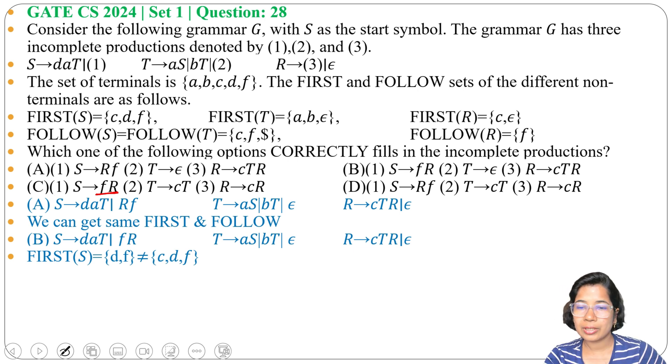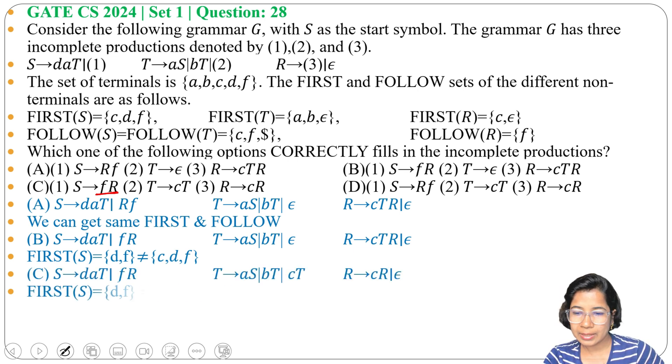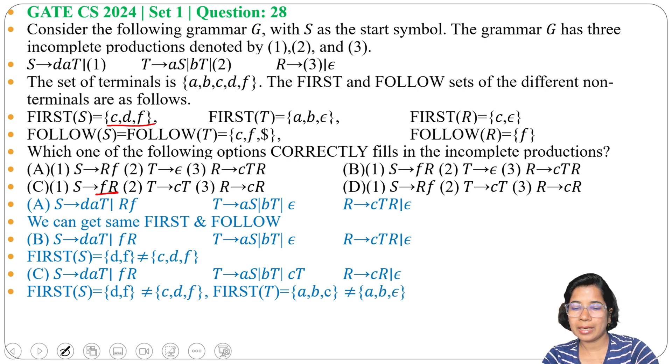Now write this production in place of 1, 2, and 3. Now first of S equals to DF. But here it's CDF. So first of S is not same. Then first of T, here we got A, B, C. But here it's A, B, and Epsilon. So first of S and first of T are not same. That's why option C is also not the answer.